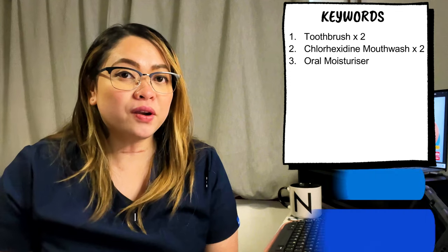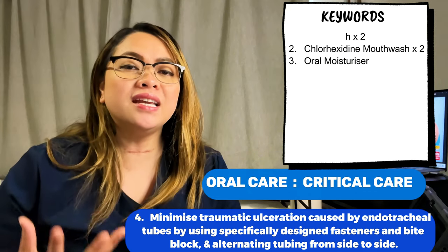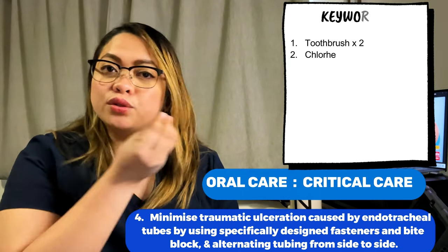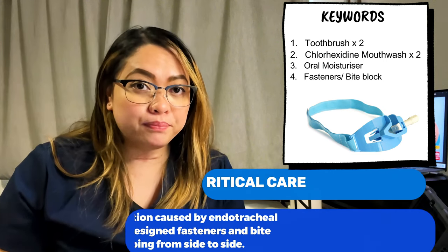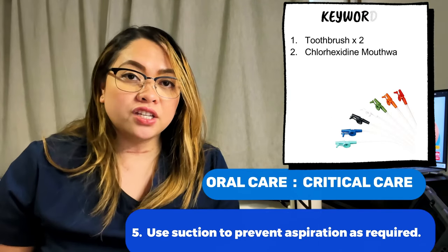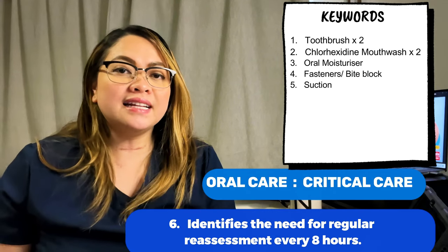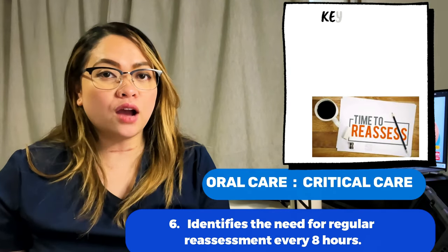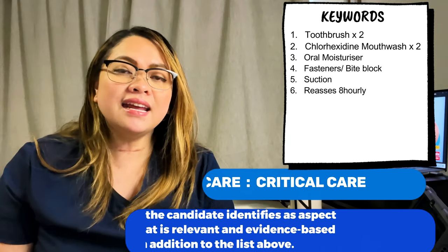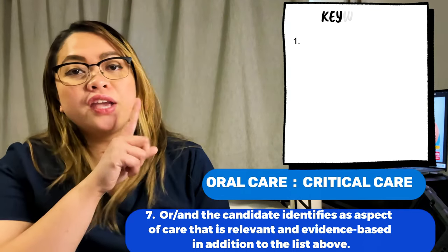The next marking criteria is to minimize traumatic ulceration caused by the endotracheal tube by using specifically designed fasteners and bite blocks, alternating side to side — keyword: fasteners and bite block. Next: use suction to prevent aspiration as required — keyword: suction. The last criteria is to identify the need for regular reassessment every eight hours — keyword: eight-hourly reassessment.